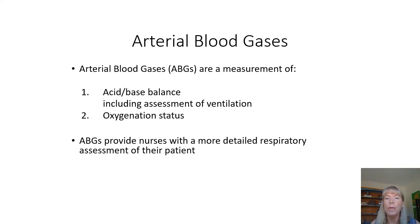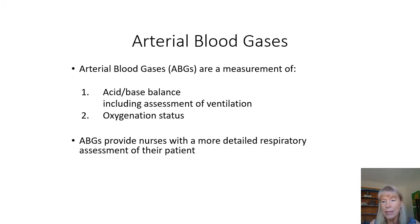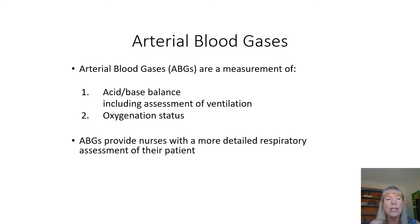An arterial blood gas is coming from the artery, so it's oxygenated blood. When we look at that ABG, we are going to look at the acid-base balance including an assessment of ventilation, and then we are also going to look at oxygenation status. Those are the two primary goals every time we look at an ABG. It gives us a very detailed assessment of a patient's respiratory status but also their acid-base balance.